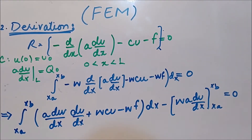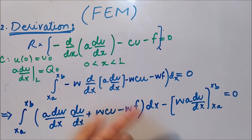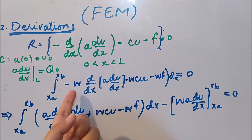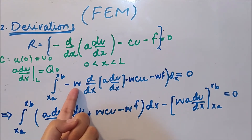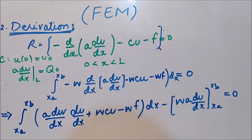To recall, we used integration by parts and the weighted residual statement to approximate the differential equation, and we will use this in the upcoming process. Returning to the weighted integral statement, w is still unknown and we need to determine what the shape function will be.